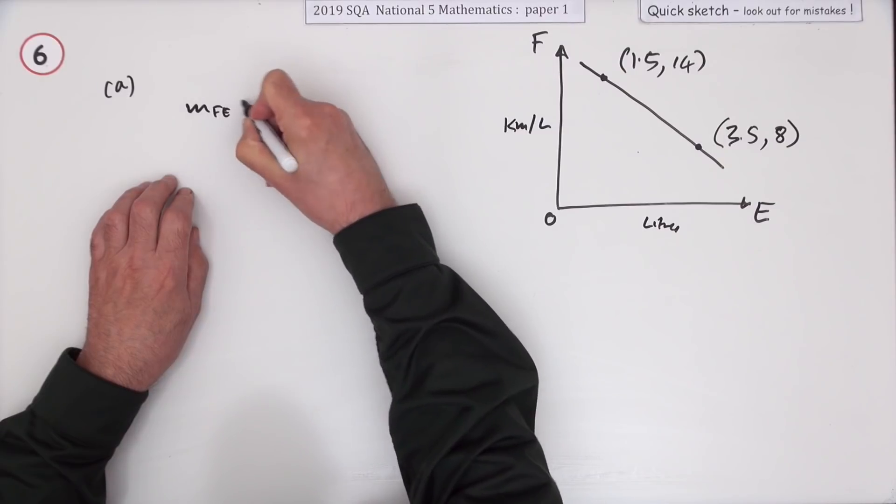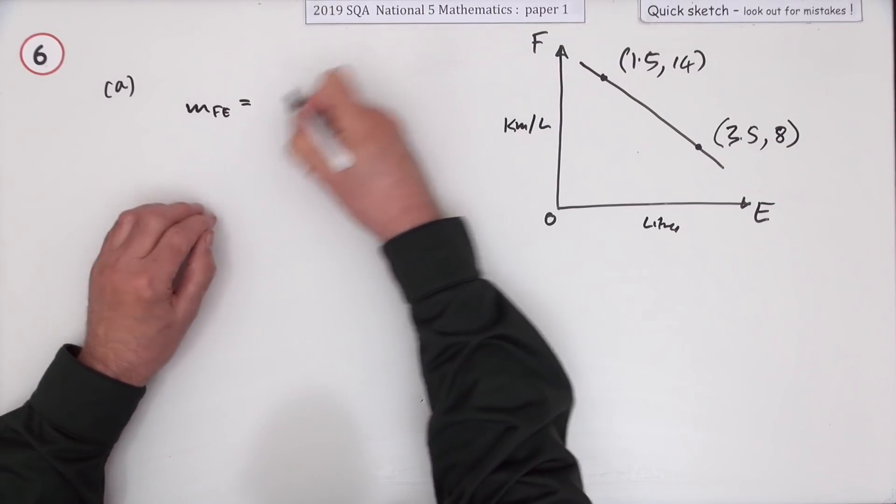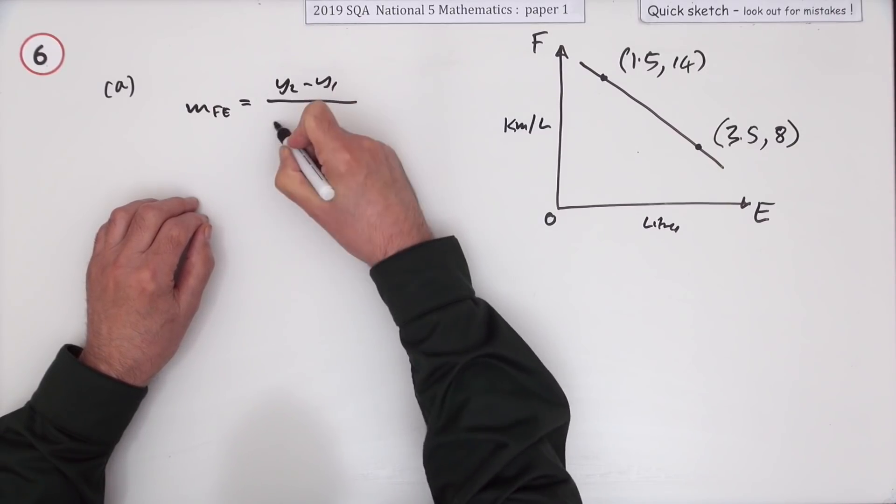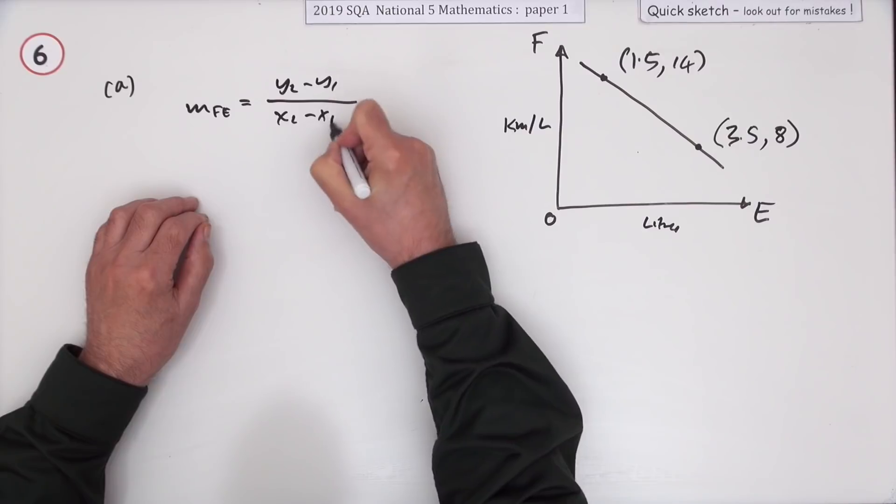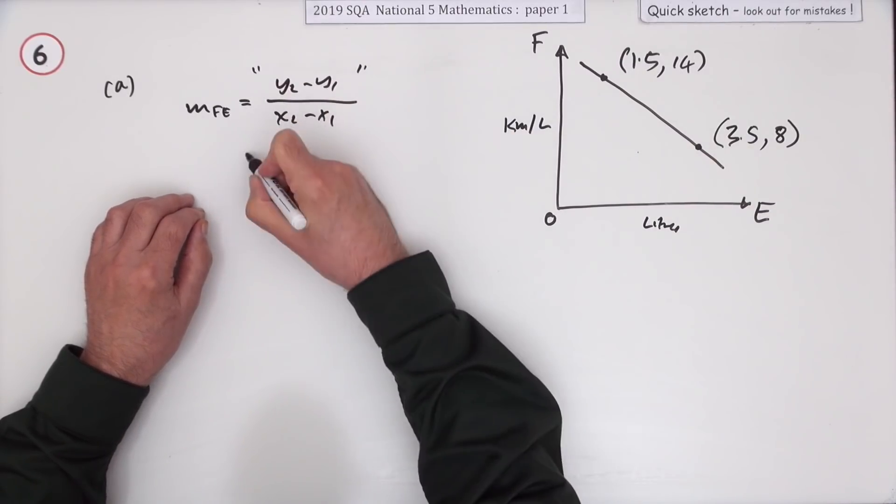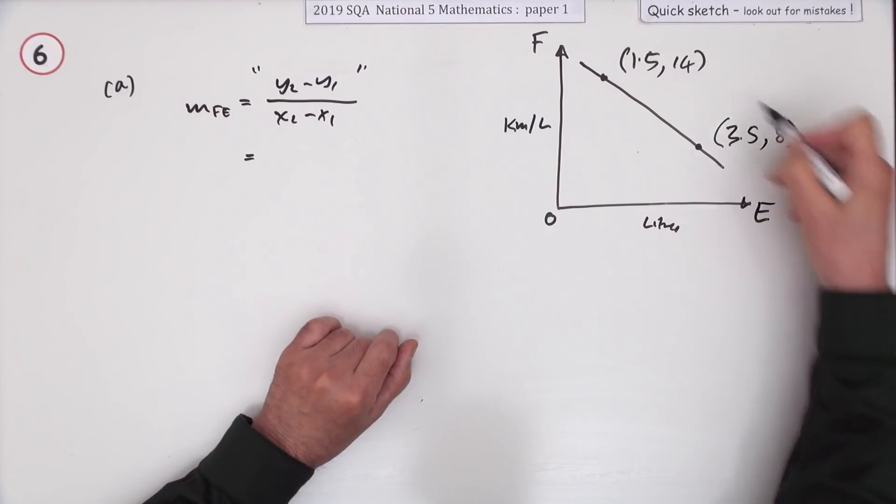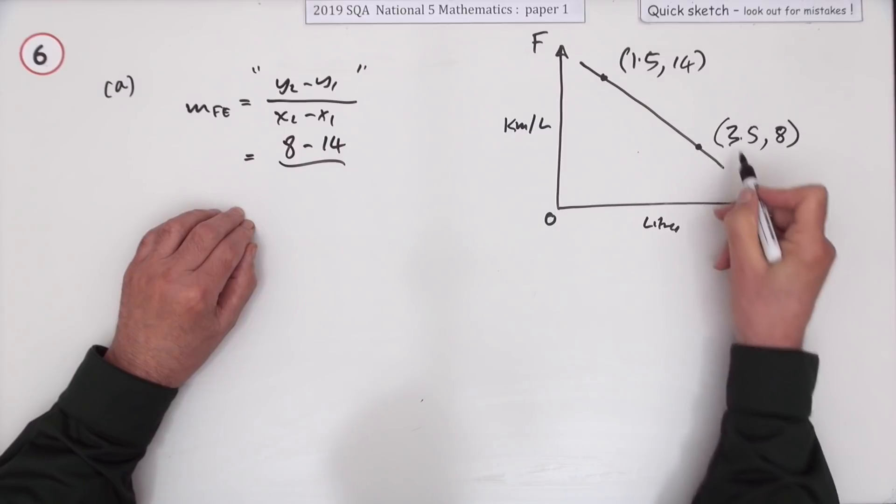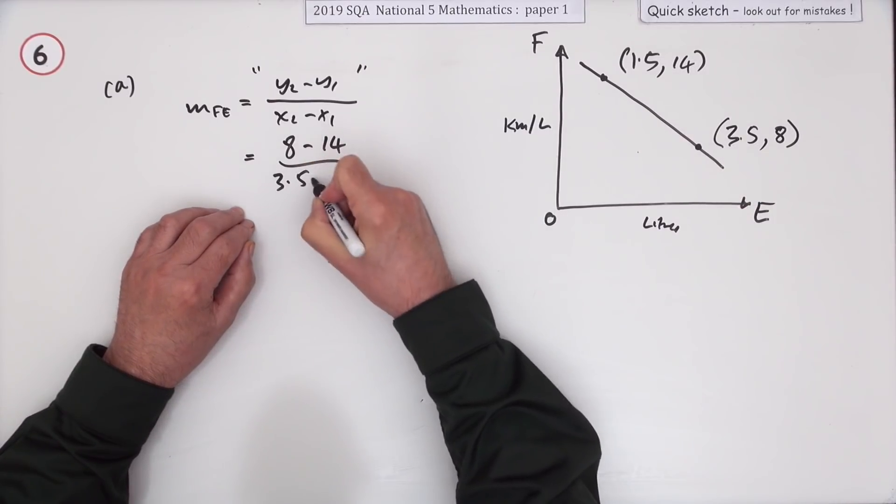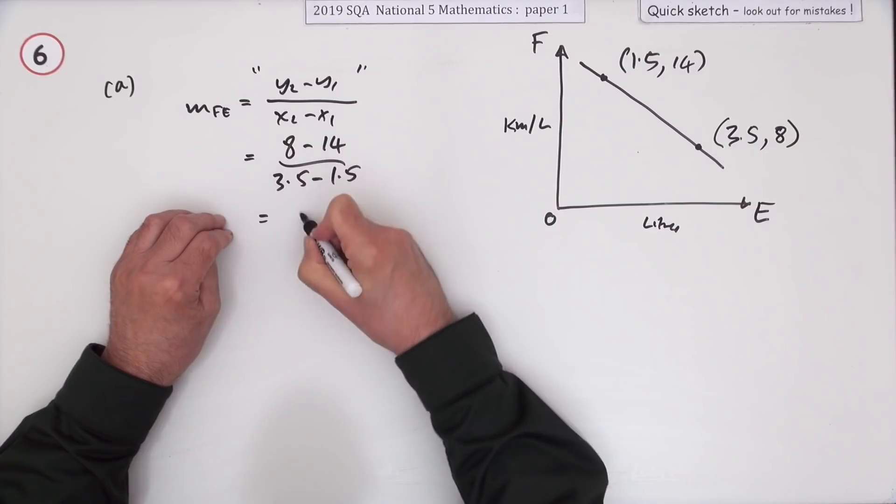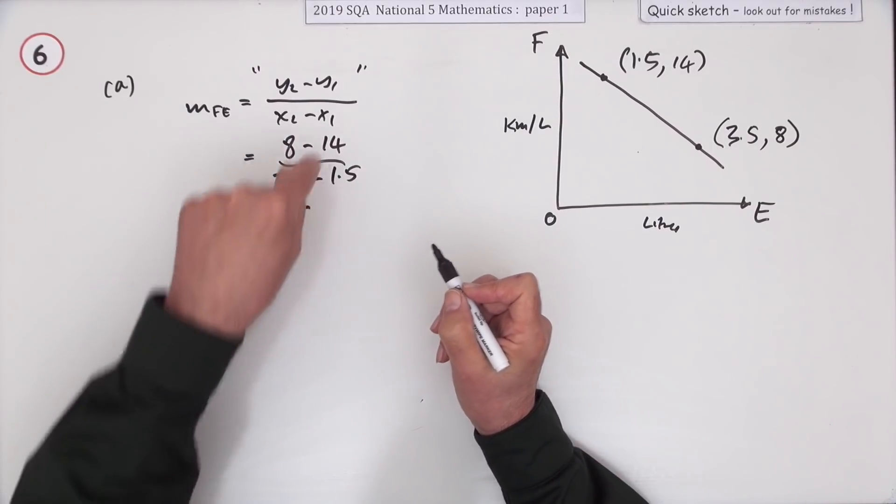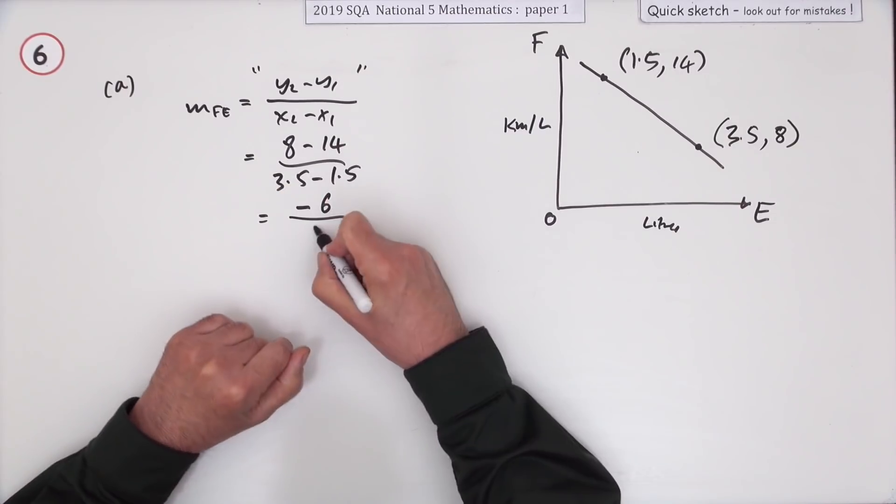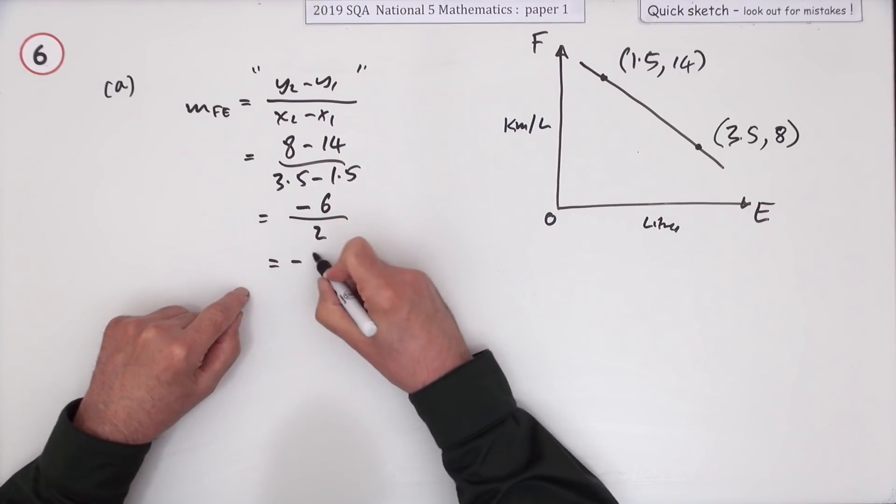Find the equation of that line. You'll need its gradient. So what's the gradient of that line? That'll be the difference in the y-coordinates over the difference in the x-coordinates. y2 minus y1, x2 minus x1. Except they're not y's and x's. So maybe we'll just put inverted commas around that. So difference 8 take away 14. That's okay because it's meant to be negative because it's going down. 3.5 take away 1.5. So that is negative. 8 take away 14 is the negative of 14 take away 8, which is 6. And 3.5 take away 1.5 is 2. So that gradient is negative 3.